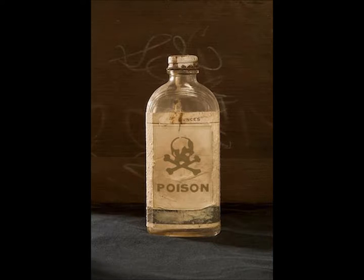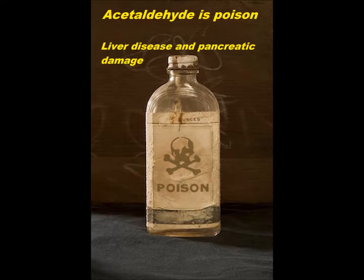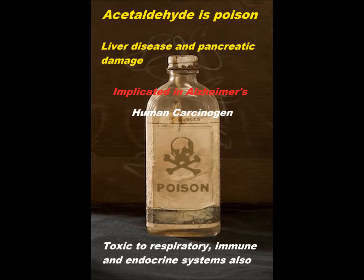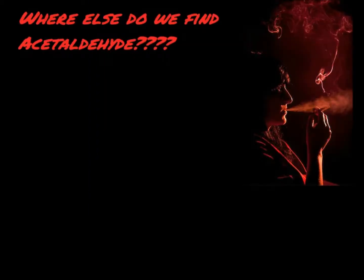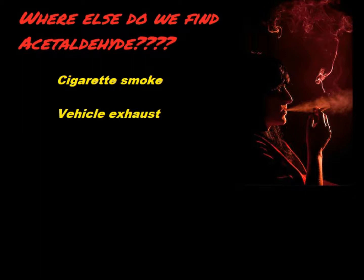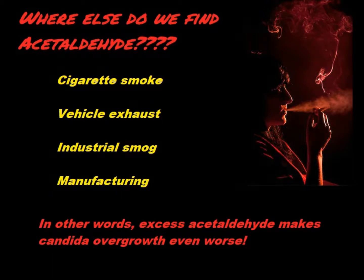Acetaldehyde, which is closely related to formaldehyde, is what causes liver disease and pancreatic damage from alcohol abuse. Individuals who have problems breaking down acetaldehyde also have a greater risk of developing Alzheimer's disease. Acetaldehyde is classified as a probable human carcinogen, a neurotoxin, and it's also toxic to the respiratory, immune, and endocrine systems. It impairs the transport of oxygen by blood hemoglobin molecules and severely compromises brain neuron activity and function. Acetaldehyde is also one of the compounds found in cigarette smoke, vehicle exhaust fumes, and industrial smog, and is widely used in manufacturing — typically grouped with plastics, dyes, fabrics, adhesives, fuels, preservatives, and fragrances. The pervasiveness of acetaldehyde further explains why individuals with Candida overgrowth can be so sensitive to their environment — their inability to break down any excess acetaldehyde can cause even the most trivial exposure to wreak havoc on the body.